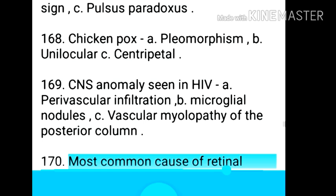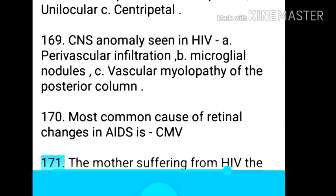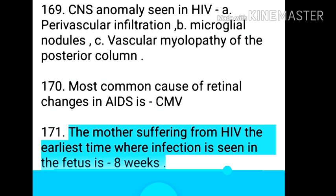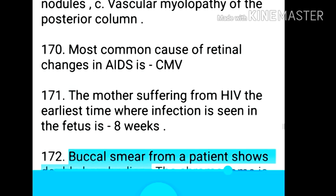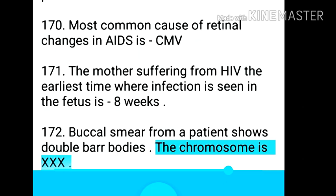Point 171: Most common cause of retinal changes in AIDS is CMV. Point 172: The mother suffering from HIV — the earliest time where infection is seen in the fetus is 8 weeks. Point 173: Buccal smear from a patient shows double bar bodies — the chromosome is XXX.